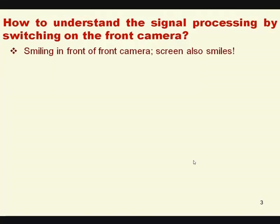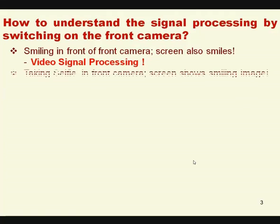Most of us are looking at our face only by looking at the front camera, not by looking at the mirror. Hence the front camera is becoming a mirror for most of us. Smiling in front of the front camera — the screen is also smiling. That is the message. From this, what do we understand? This is called video signal processing. Taking a selfie with the front camera, the screen shows my image, and while smiling if you take a snapshot, the image also shows a smiling image — which is called image processing.